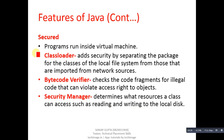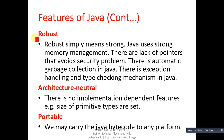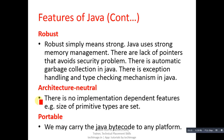Next is robust. Robust simply means strong. Java uses strong memory management. There is a lack of pointers that avoids security problems. There is automatic garbage collection in Java, and there is an exception handling and type checking mechanism in Java. These features make Java robust.